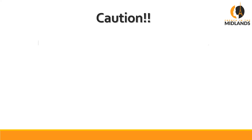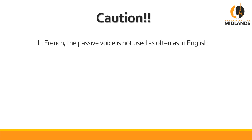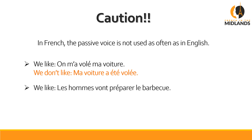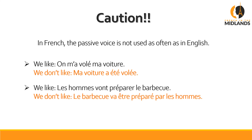Now where you have to be really careful is that the passive voice in French is not actually used as often as in English. We tend to avoid it — it's still grammatically correct in some cases, we just don't like it. For example, 'On m'a volé ma voiture' — someone stole my car. We don't like to say 'ma voiture a été volée', yet in English 'my car was stolen' is the first thing you'd say. We prefer the construction with 'on'. Similarly, we prefer 'les hommes vont préparer le barbecue' over 'le barbecue va être préparé par les hommes'. It's not wrong, we just don't like it.